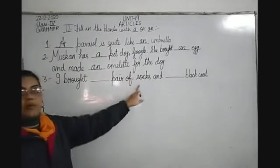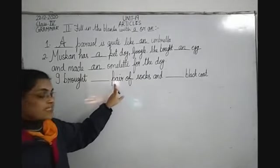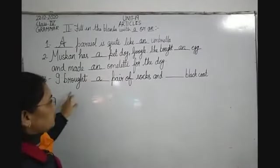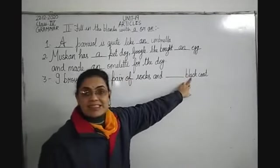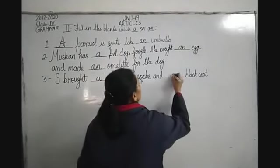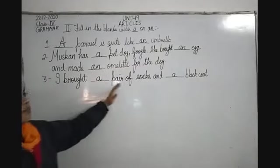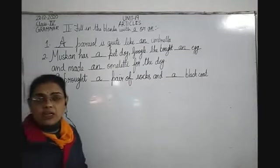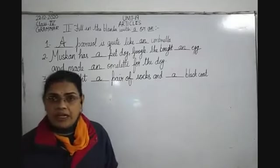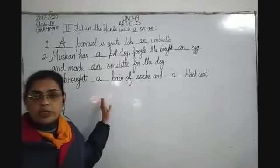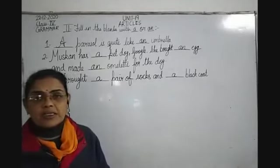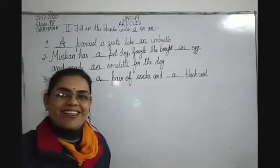Third sentence: I brought dash pair of socks and dash black coat. Pair starts with P which is a consonant with a consonant sound — A pair of socks. Black starts with B, a consonant — A black coat. Sentence: I brought A pair of socks and A black coat. That's all for today. I hope you have understood the use of the indefinite articles A and AN. I will continue the rest of the exercise in my next video. Thank you students, have a good day ahead.